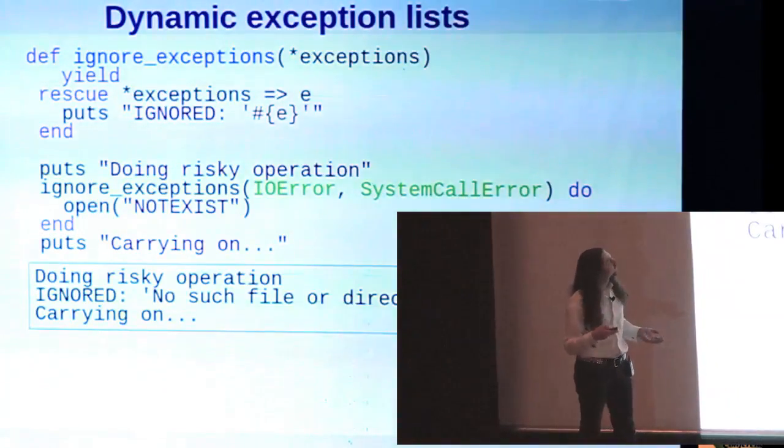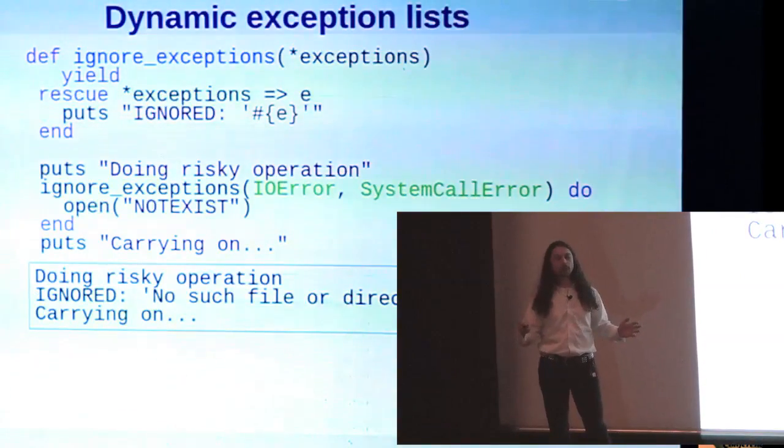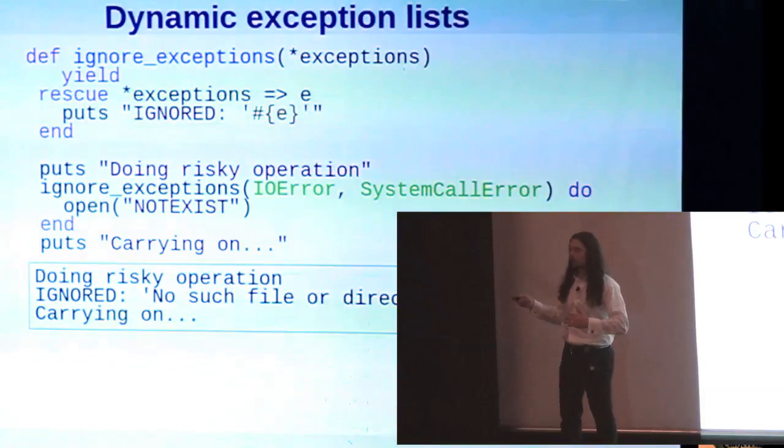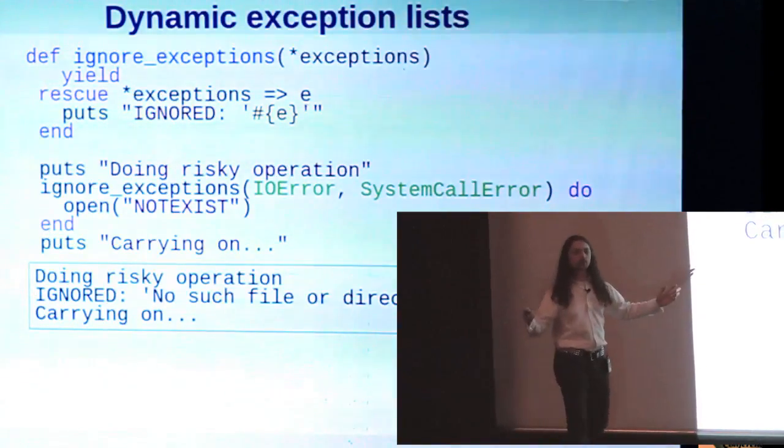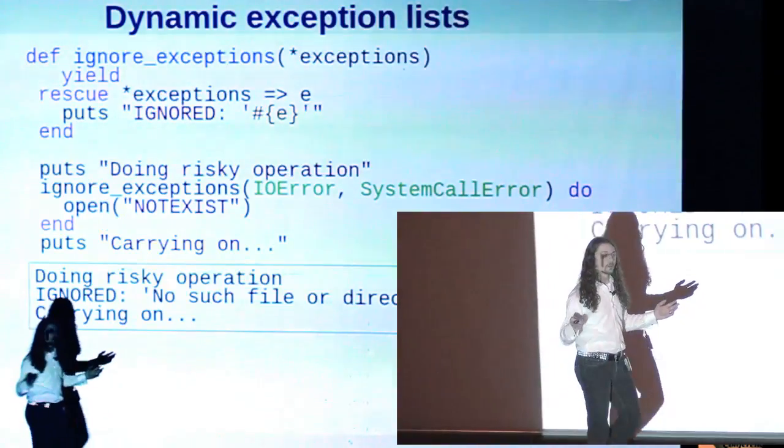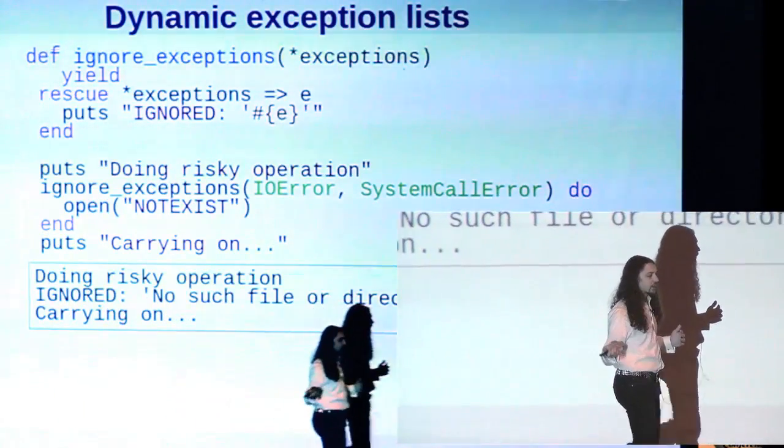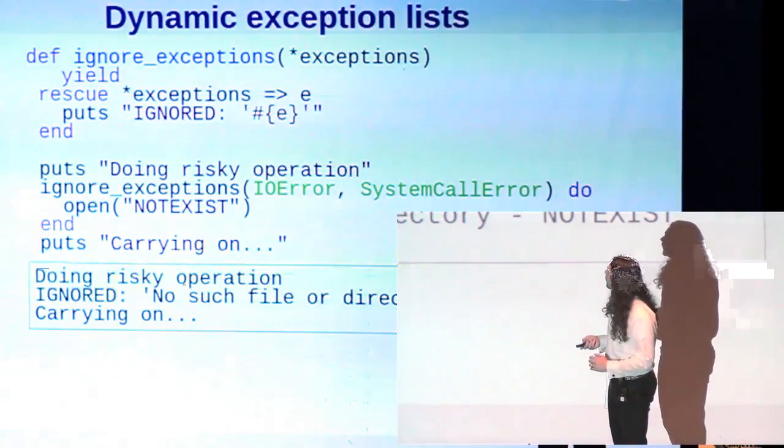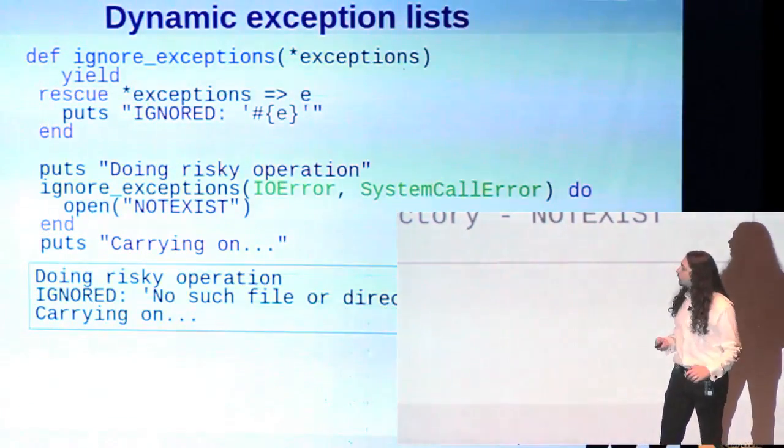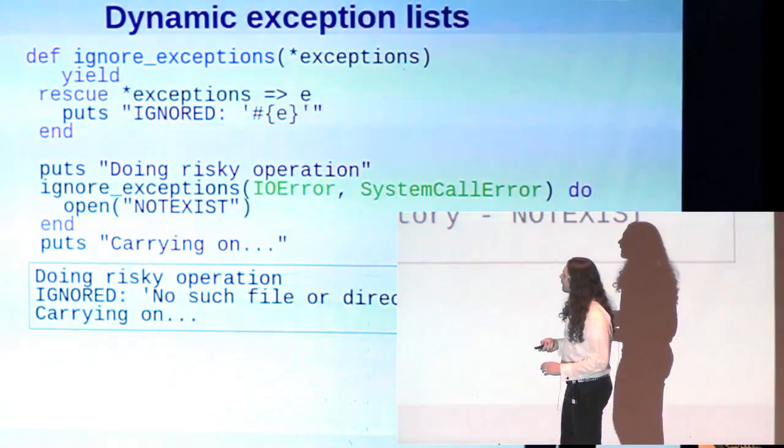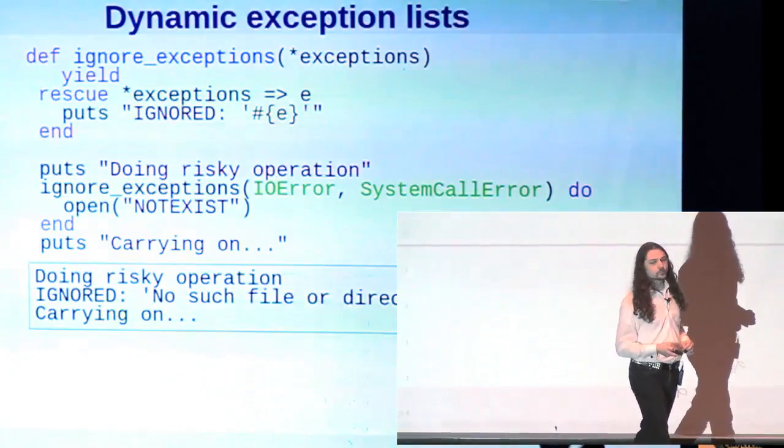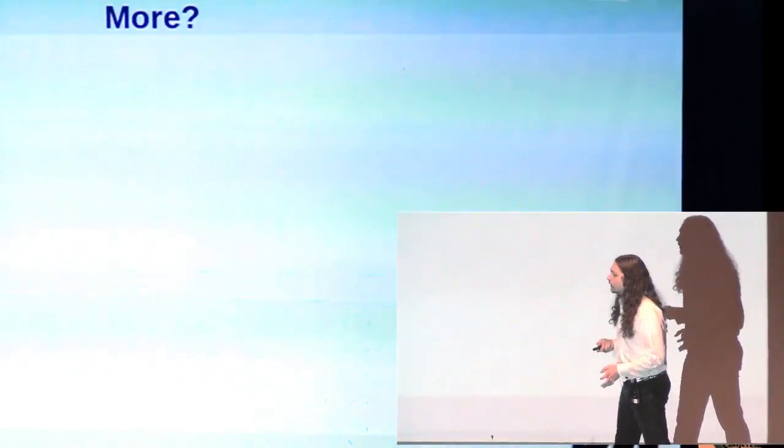Here's an example where we define an ignore_exceptions method, where we pass in a list of exceptions that we want to ignore, and then we wrap the piece of code where we want to ignore those exceptions in this block. And what it does internally, it says rescue *exceptions. So what it's doing is it's splatting out the exception list and passing that to rescue. And you can see, here is an example of using it. We say ignore IO error, ignore system call error. I don't actually recommend ignoring these errors. And they are ignored.